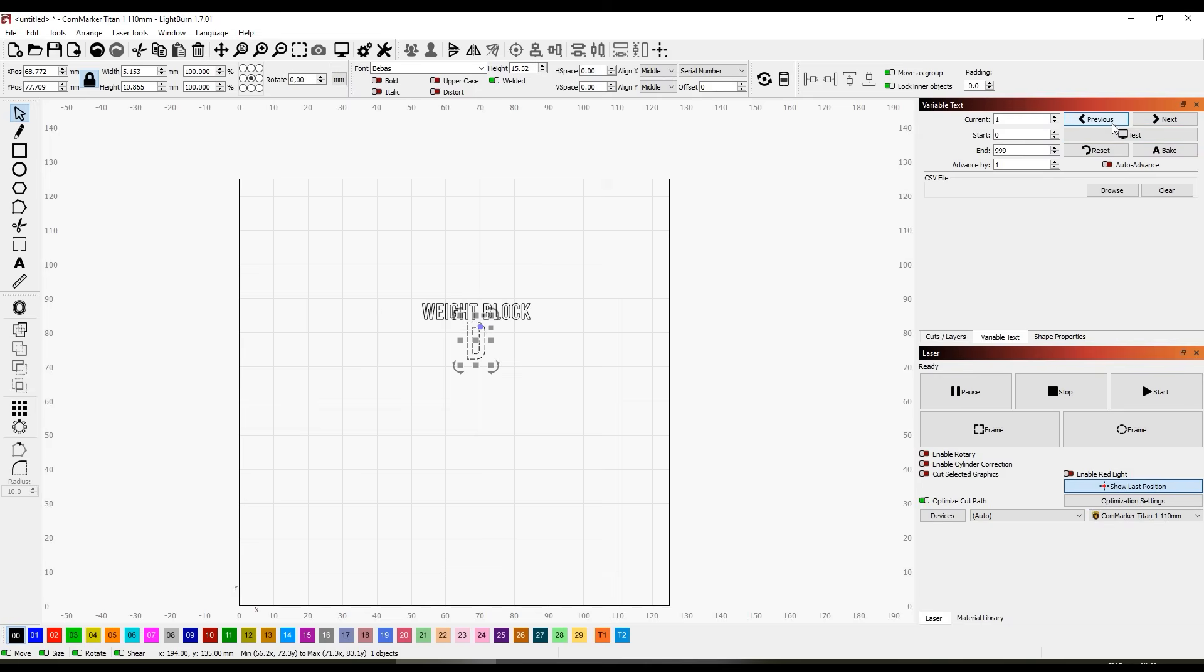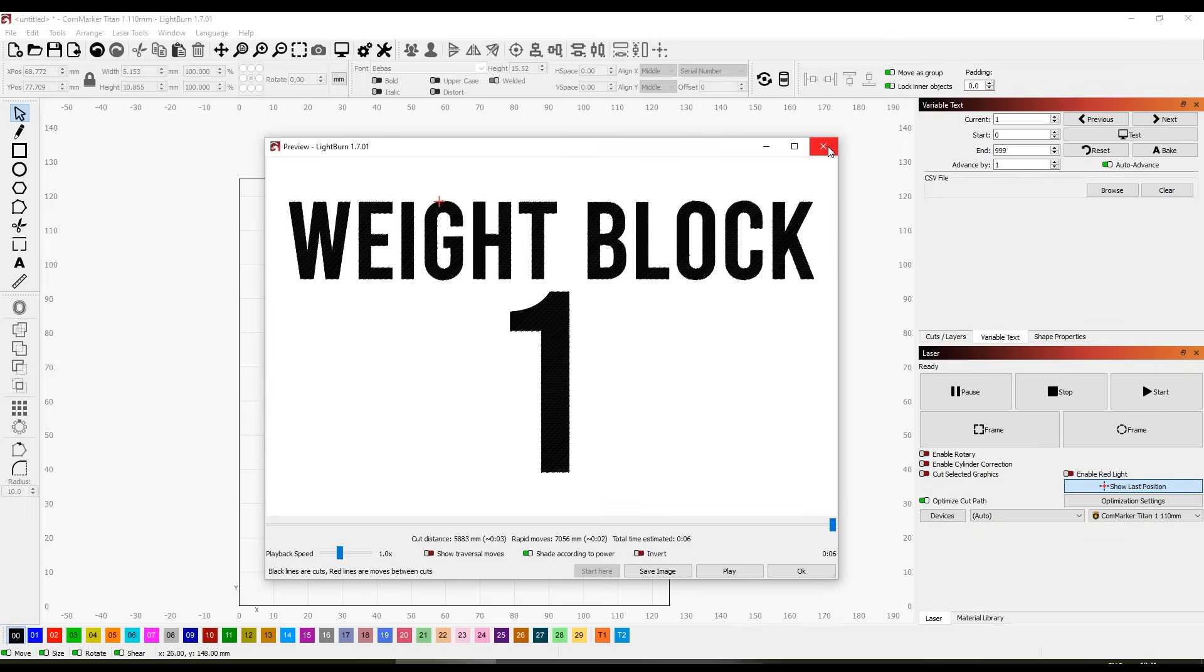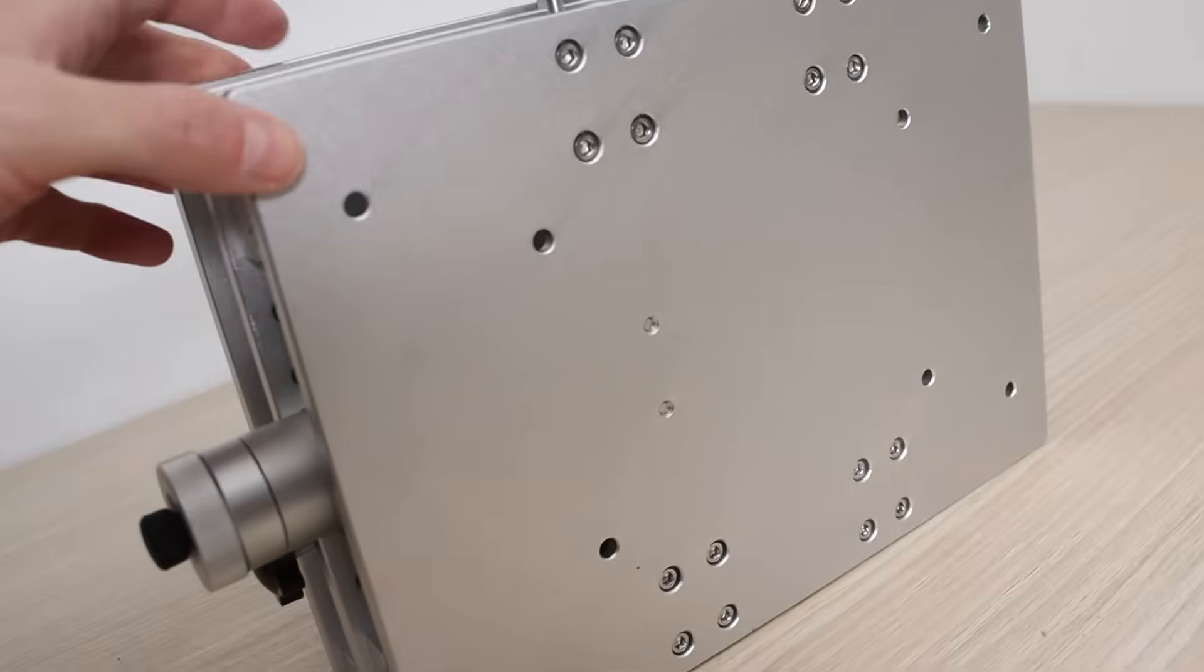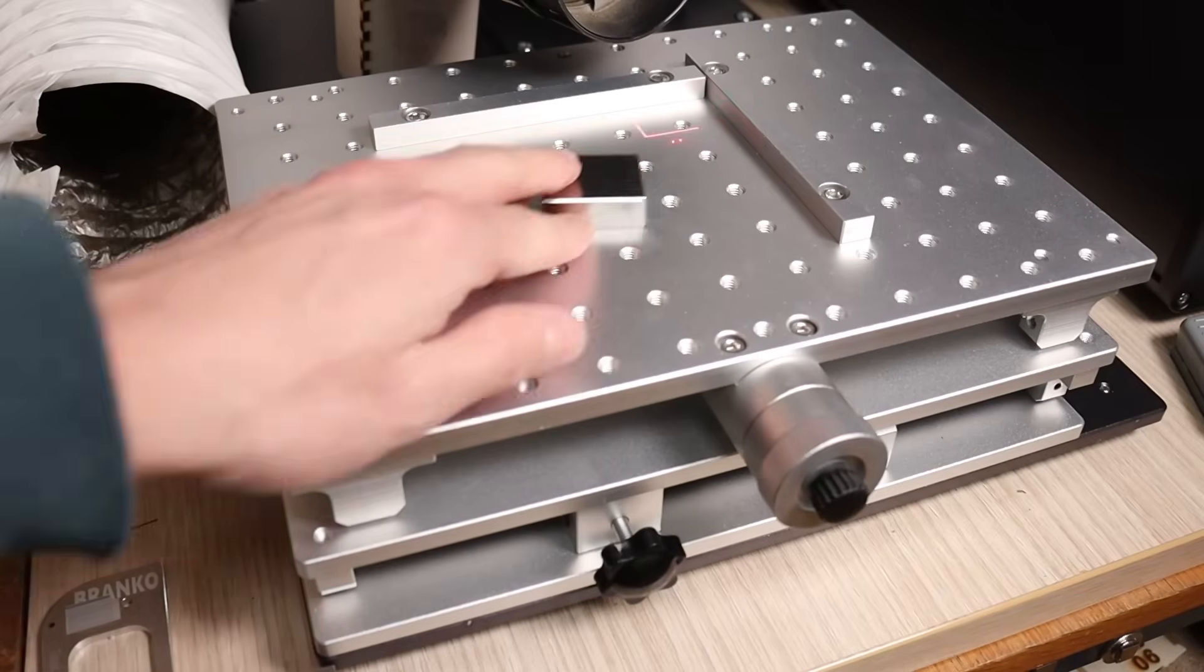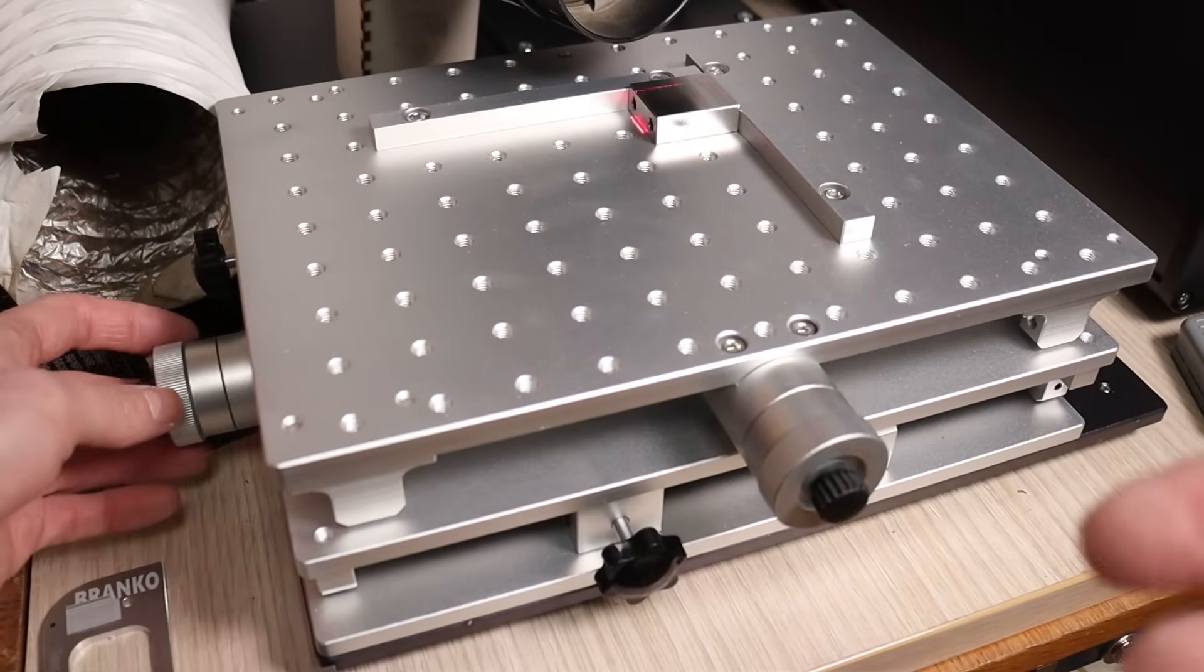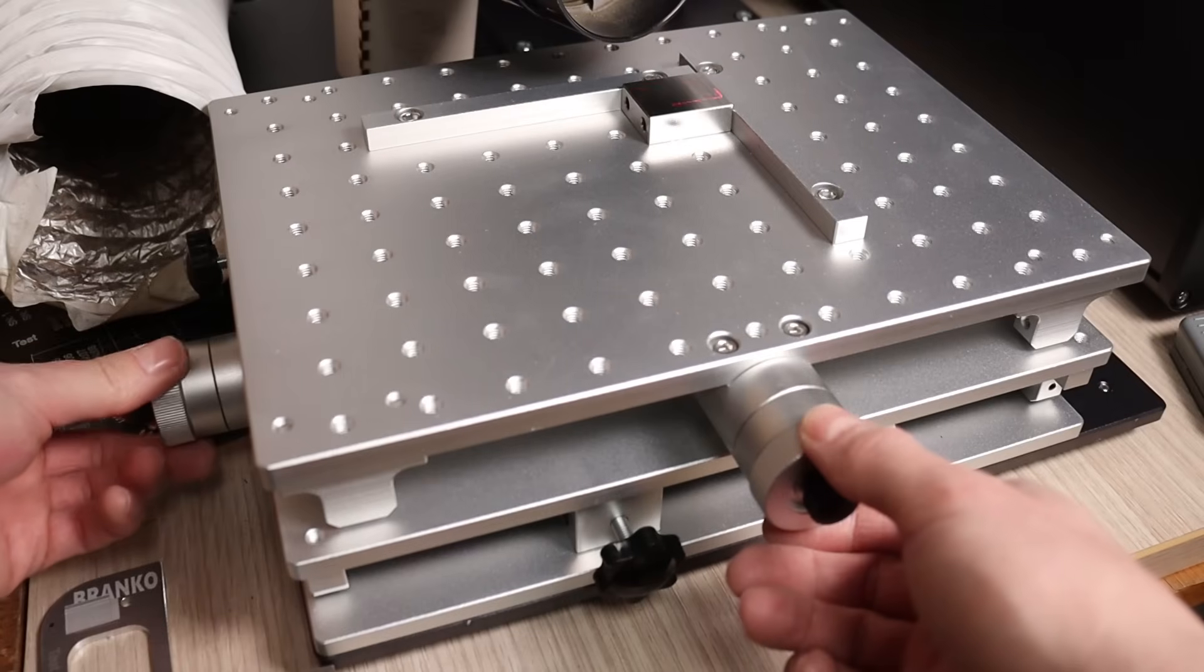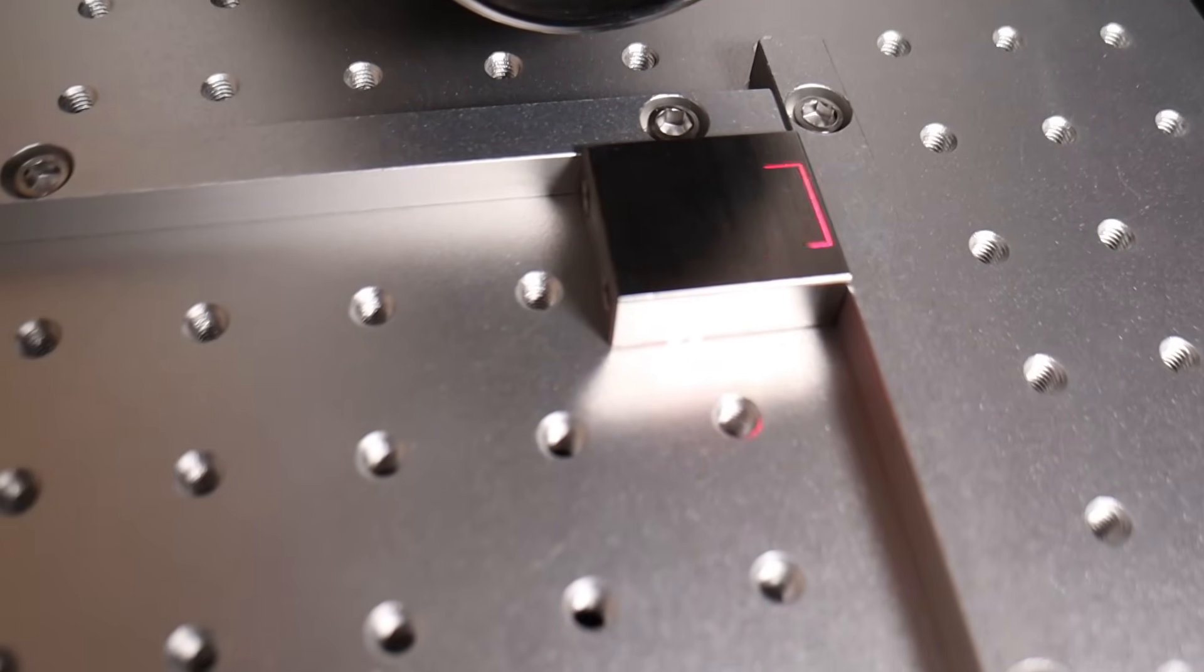This feature allows for automatic incrementation of serial numbers or date and timestamps in decimal or even in QR code format. I will also connect the foot pedal which came together with the machine. To set up the XY table, simply attach it to your laser bed using screws. This allows you to adjust engraving positions using the knobs rather than making manual adjustments in software, which is both faster and more precise.